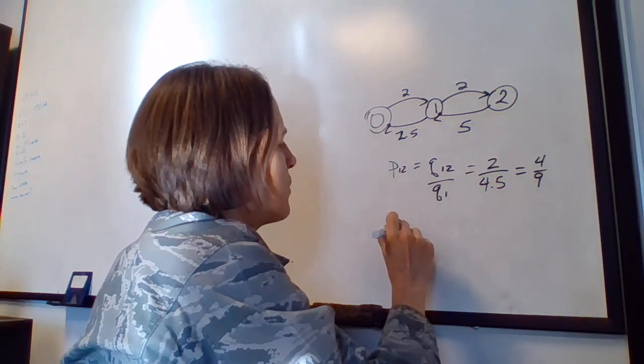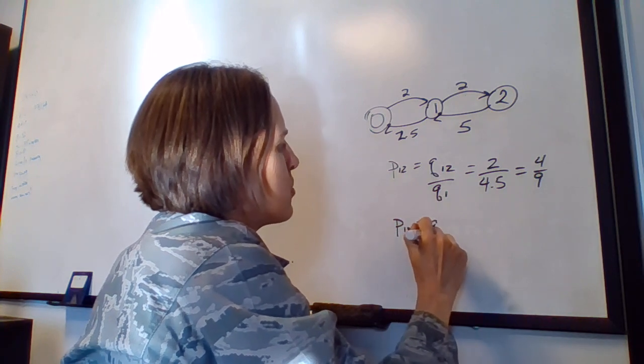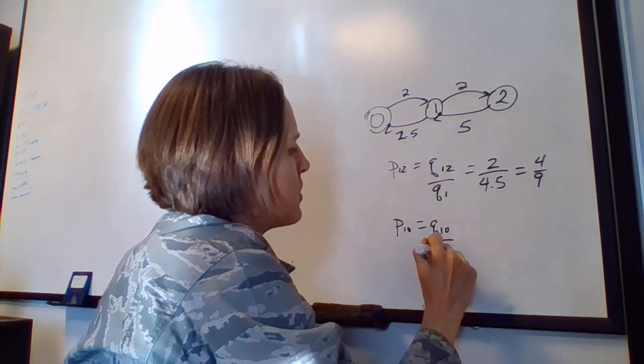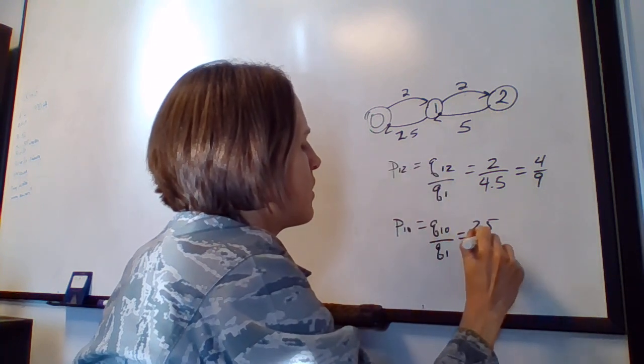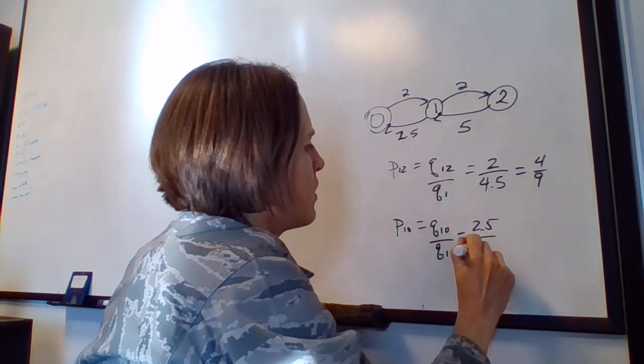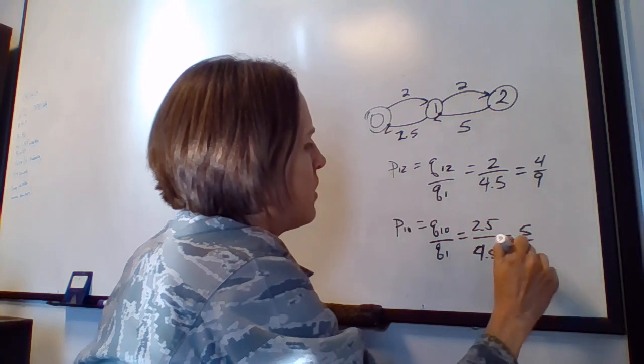If we want to look at the probability of going to state 0, we just say, what's the transition rate going from 1 to 0 divided by the total transition rate? In this case, 2.5 over 4.5.